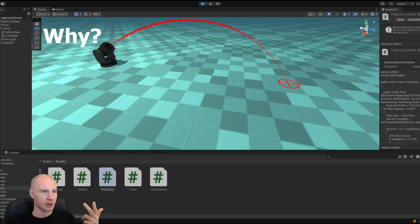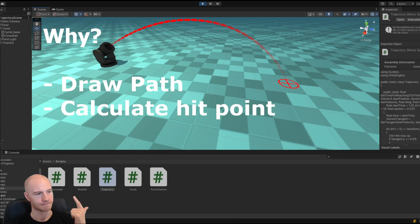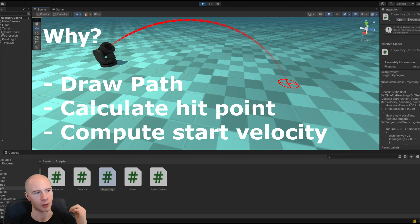The most common three things are that you want to calculate the whole trajectory like you want to display it with a line renderer for example. And the second reason is you want to know when an object hits the ground. The exact time point when it happens. And the third reason is that you want to know how fast you have to shoot so that an object hits a certain position.